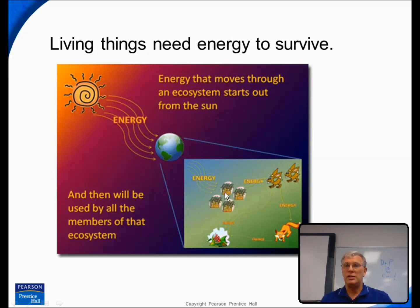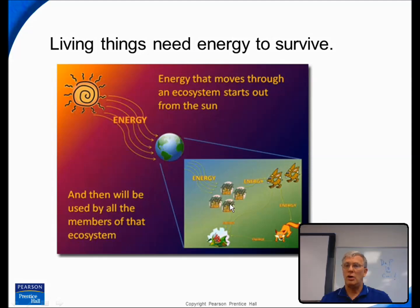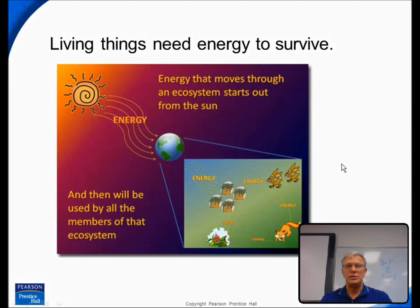Plants absorb energy from the sun and through a process called photosynthesis convert that energy into chemical energy in the form of sugar, particularly glucose, which is then made into starch in some plants. Animals eat the plants and get energy from them, and animals eat the animals that eat the plants and get energy from them. So we all ultimately get our energy from the sun.